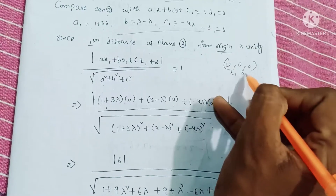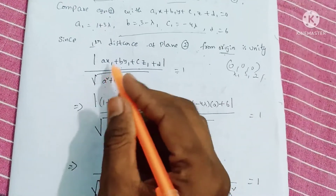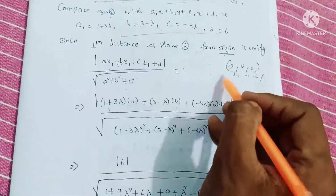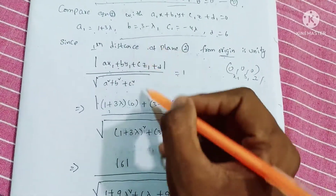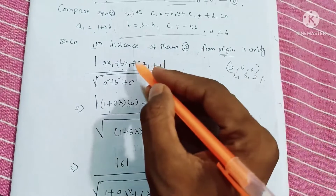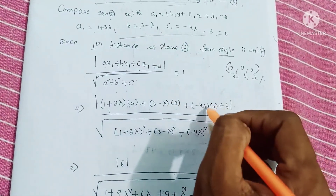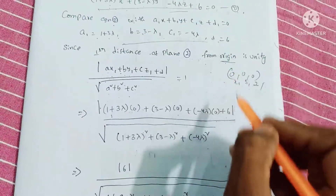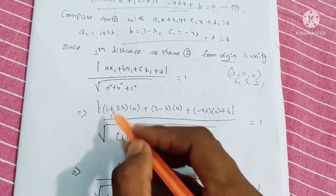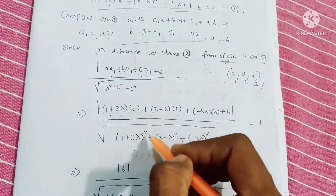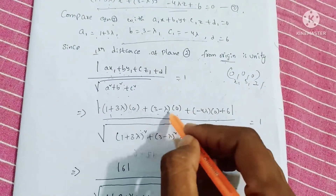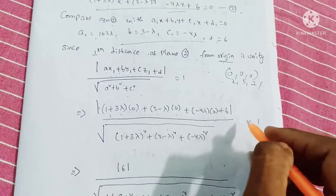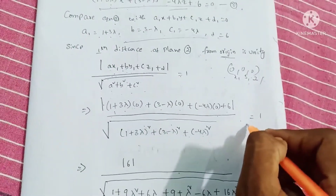Substituting x1 = 0, y1 = 0, z1 = 0: A into 0 plus B into 0 plus C into 0 plus D equals 6. So the numerator becomes modulus of 6, divided by root over (1 plus 3 lambda) whole square plus (3 minus lambda) whole square plus (minus 4 lambda) whole square, equal to 1.